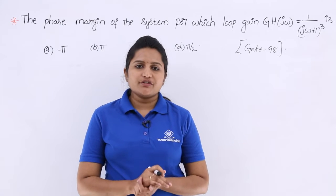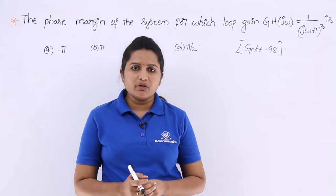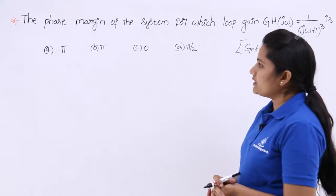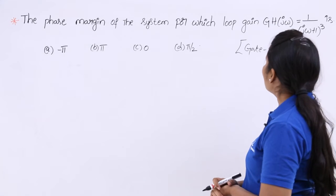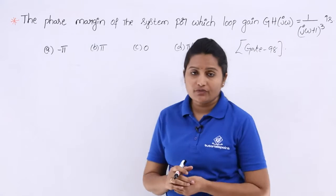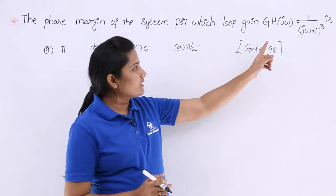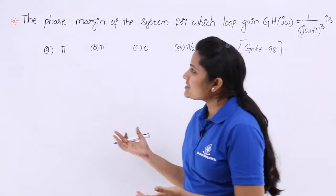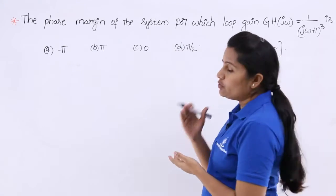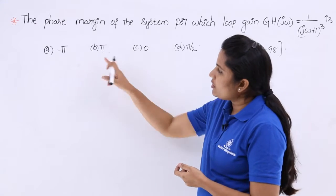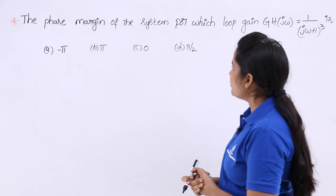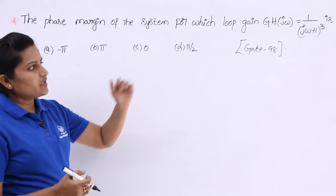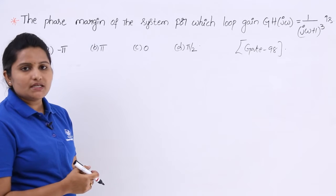In this video, we are going to discuss a previous GATE problem related to phase margin. This problem is given in GATE 98. The phase margin of the system for which the loop gain G·H(jω) is equivalent to 1 by (jω + 1)³ is to be found. The options given are minus pi, pi, 0, and pi by 2. The loop gain or open loop transfer function is 1 by (jω + 1)³.